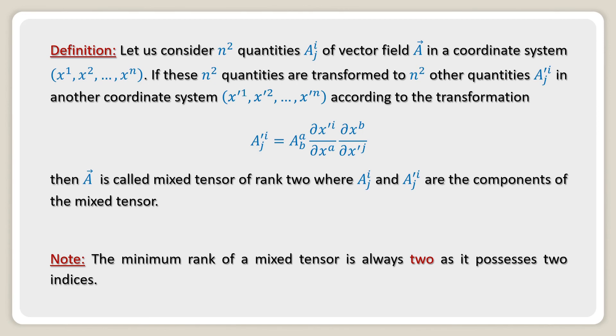Note: the minimum rank of a mixed tensor is always 2, as it possesses 2 indices.